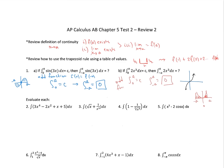Now moving on to number 2, we're just going to go ahead and integrate. So this is going to be 3/5 x to the 5th minus 2/3 x cubed, plus 1/2 x squared, plus 5x, plus c. That's this first problem fully integrated.